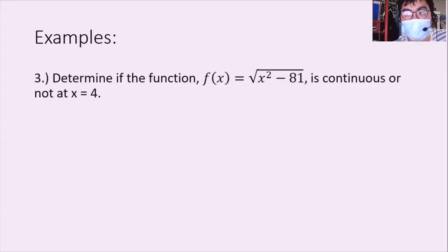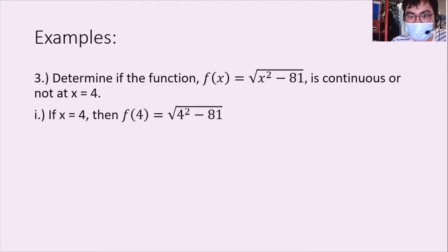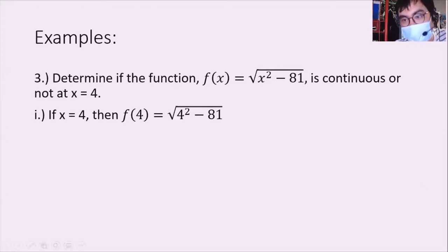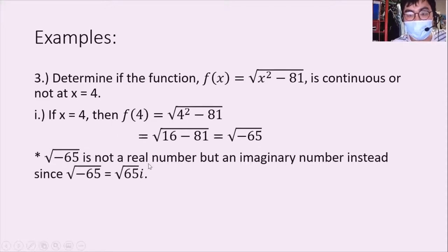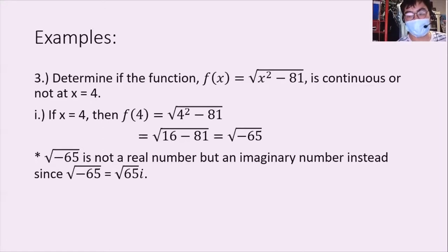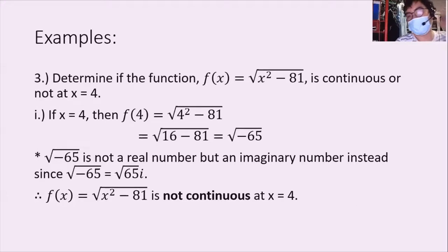Next, determine if f(x) = √(x²-81) is continuous or not at x = 4. We substitute: f(4) = √(4²-81) = √(16-81) = √(-65). Since we have a negative value under the square root, the result is an imaginary number — √(-65) = √65 · i. Because it is not a real number, f(4) does not exist, so this function is not continuous at x = 4.